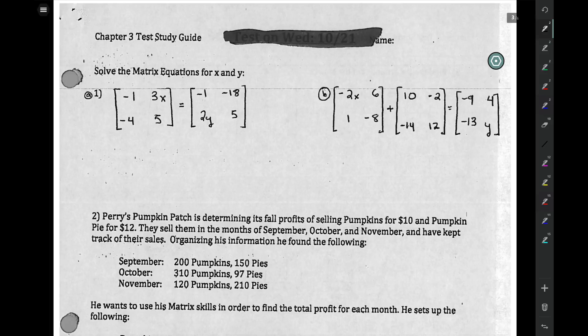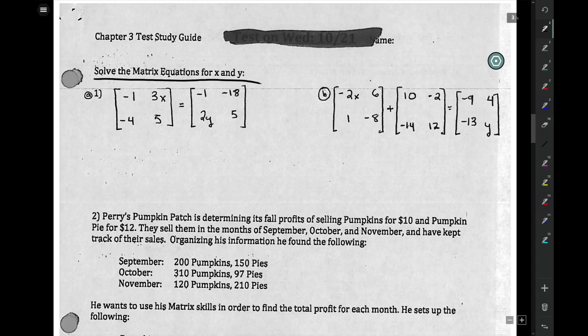Hey guys, part four of our study guide here, just an example of solving matrix equations. A lot of times students forget how easy they are. If you have two matrices equal to one another, that means each cell is equal to each cell.